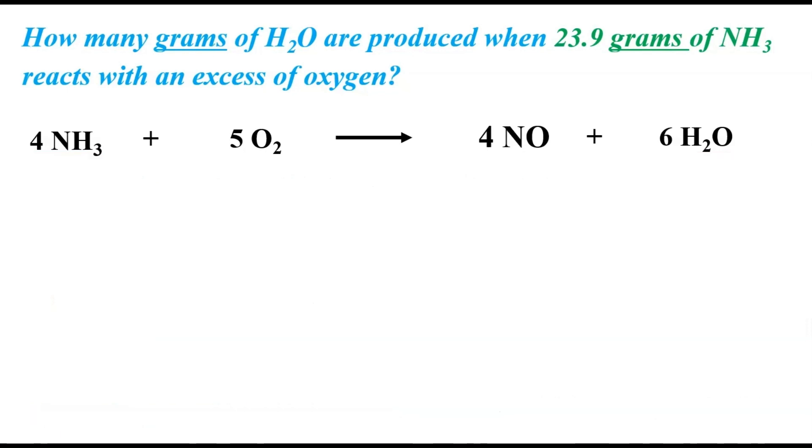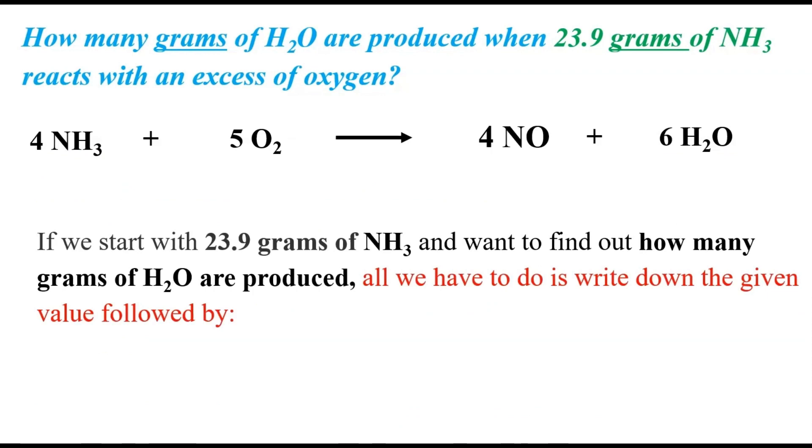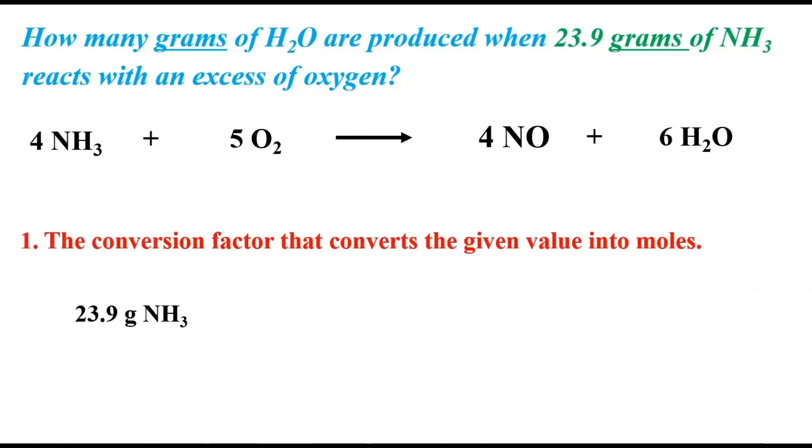So, diving into the problem a little, if we start with 23.9 grams of NH3 and want to find out how many grams of water are produced, all we have to do is write down the given value followed by, first, the conversion factor that converts the given value into moles. You notice the grams of ammonia are able to cancel out, and now we've got moles of ammonia. So now we can work with our mole ratio because everything is in moles now.